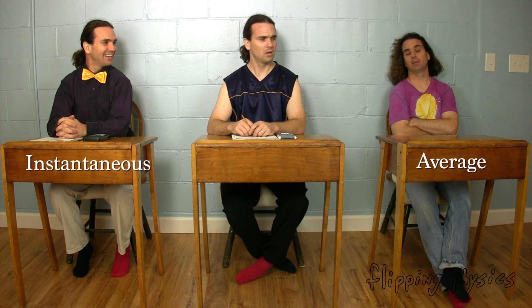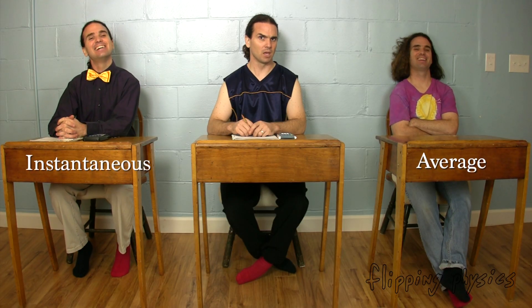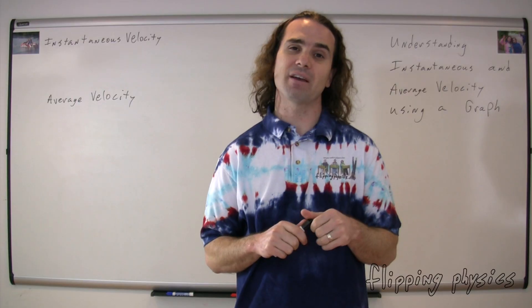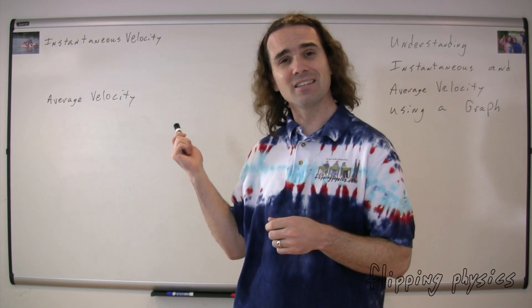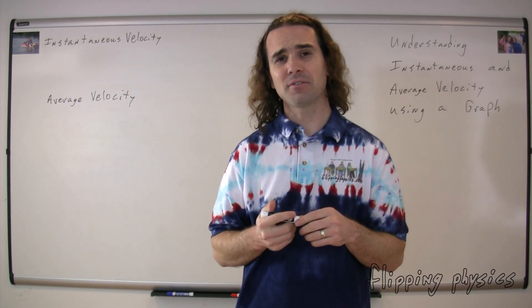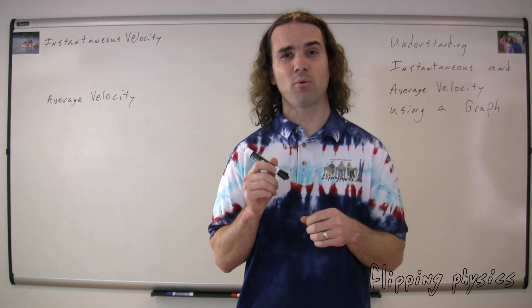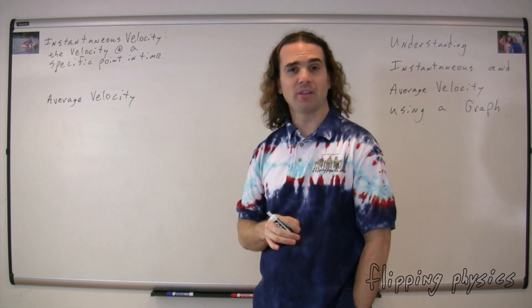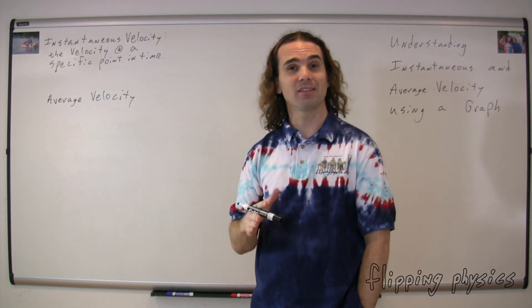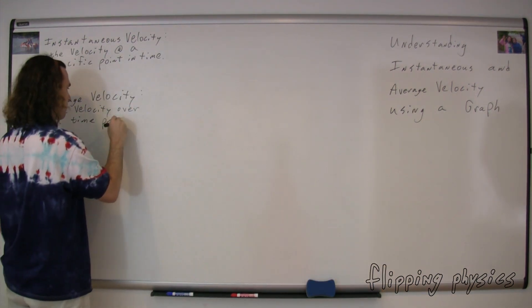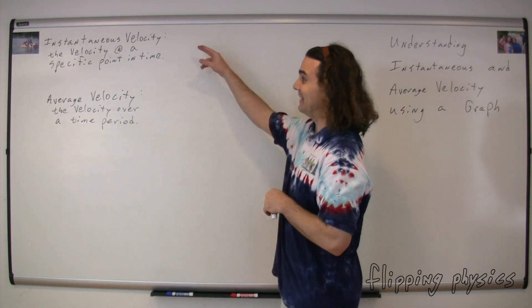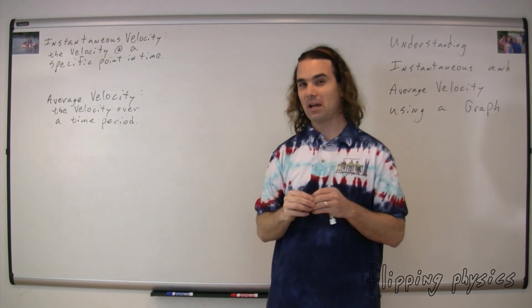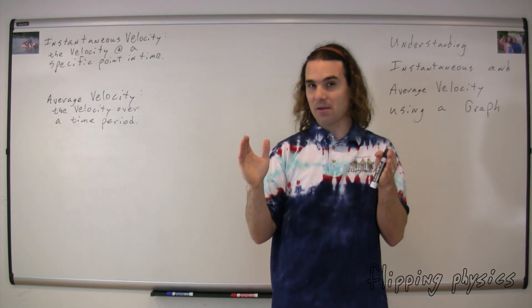Instantaneous. Average. They look the same to me. We're going to learn the difference between instantaneous and average by way of the term velocity. We have instantaneous velocity and average velocity. Instantaneous velocity is the velocity at a specific point in time, while average velocity is the velocity over a time period or a time duration.